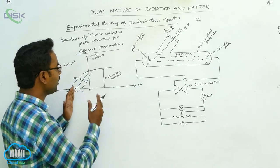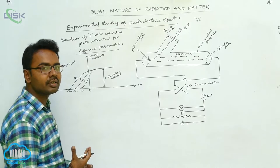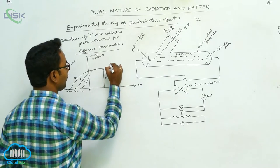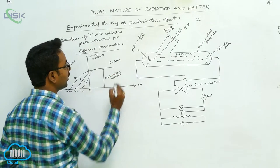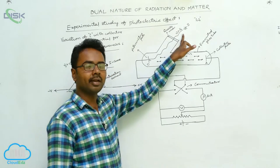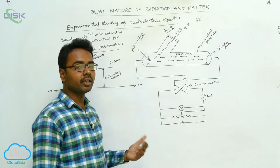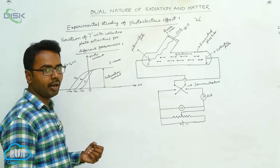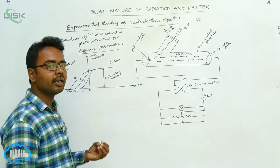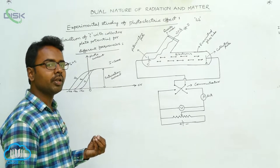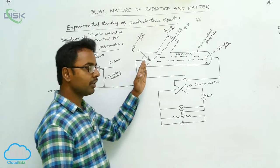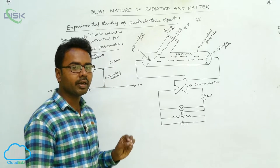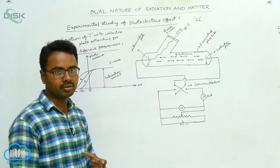Now, keeping the intensity of the incident radiation the same, we are increasing the frequency. As we increase the frequency, the kinetic energy of electrons will be increased. For a metal surface, the work function is constant — meaning the minimum energy required to eject electrons is constant.